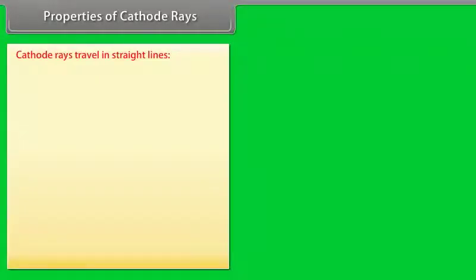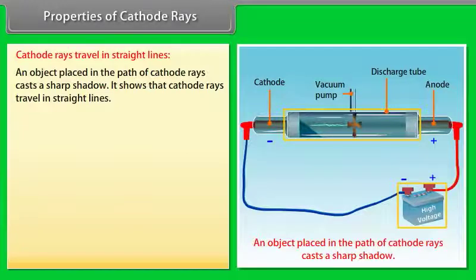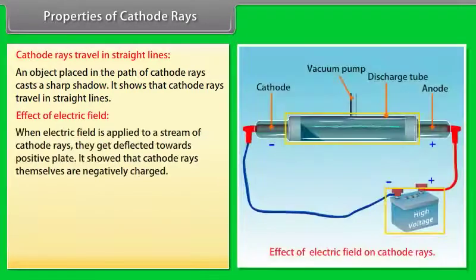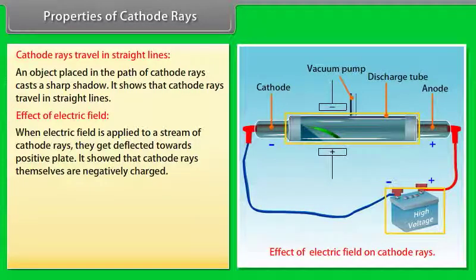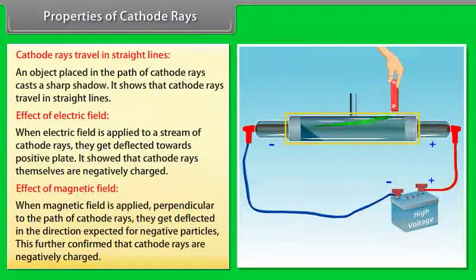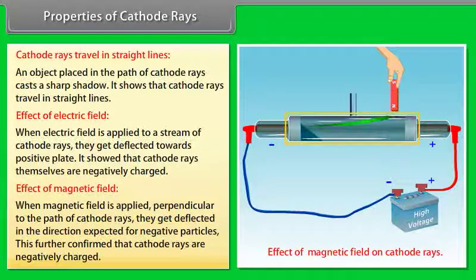Properties of cathode rays: Cathode rays travel in straight lines — an object placed in their path casts a sharp shadow. When an electric field is applied to a stream of cathode rays, they are deflected towards the positive plate, showing that cathode rays are negatively charged. When a magnetic field is applied perpendicular to the path of cathode rays, they get deflected in the direction expected for negative particles, further confirming that cathode rays are negatively charged.